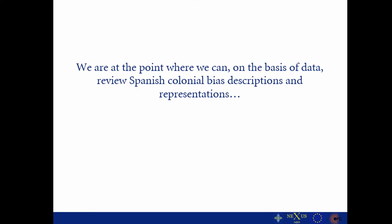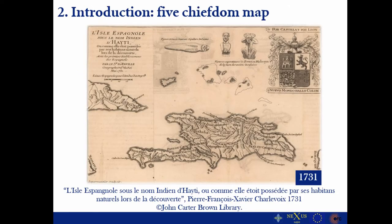After more or less six years of research, we are at the point where we can begin reviewing certain hypotheses on the archaeology and history of this island in the Caribbean with actual archaeological data, especially focusing on the Spanish-biased representations and descriptions. For this presentation, I will focus on one example which summarizes a larger debate: what is known as the Five Cacicascos map, or Five Chieftain map, done in 1731 by Pierre-François Xavier Charlevoix, a Jesuit priest, on the basis of early 16th century accounts such as Bartolomé de las Casas and Oviedo.